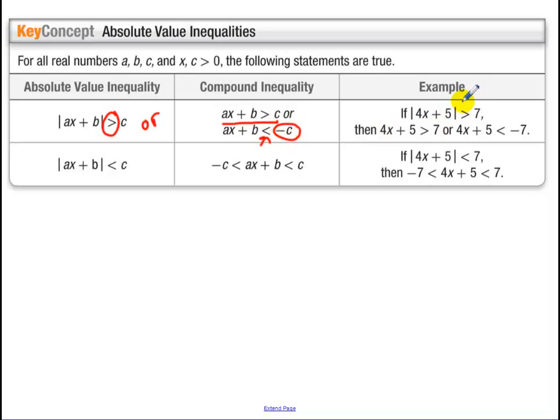So, for an inequality, you would have one looking exactly like it looks, the other one, the 7 becomes negative, and you flip your inequality sign.